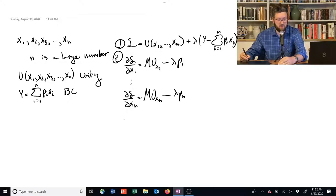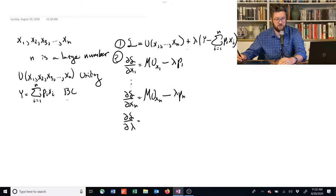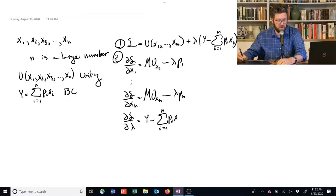And then we also have to take the derivative with respect to the Lagrange multiplier. But that's actually pretty easy. There's no exponent on it. And we just have Y minus the summation from 1 to N of PI times XI. And we set all this stuff equal to 0.